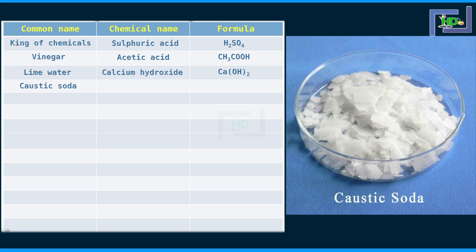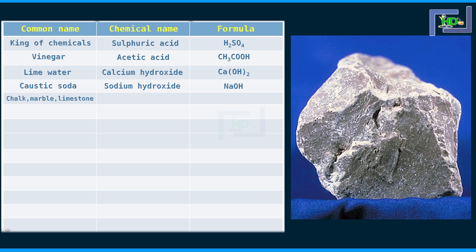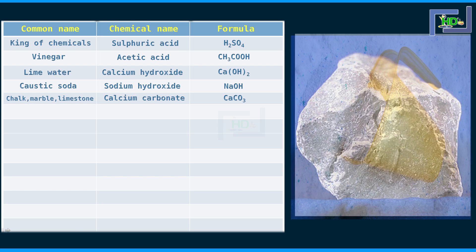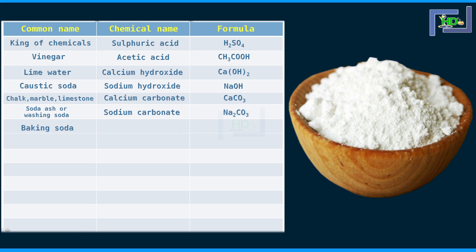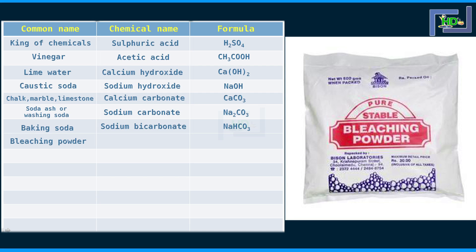Caustic soda is sodium hydroxide, with the formula NaOH. Chalk, marble, and limestone are calcium carbonate, with the formula CaCO3. Washing soda is sodium carbonate, Na2CO3. Baking soda, used in the kitchen, is sodium bicarbonate with the formula NaHCO3. Bleaching powder, used to purify water and for washing purposes, is calcium oxychloride with the formula CaOCl2.